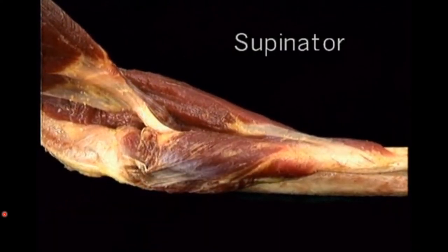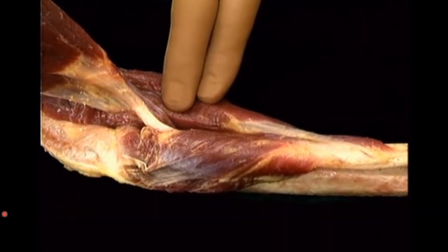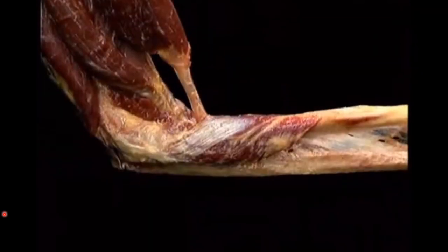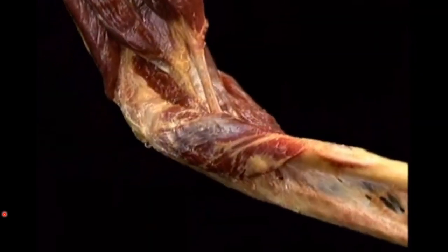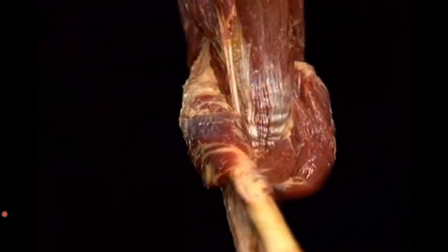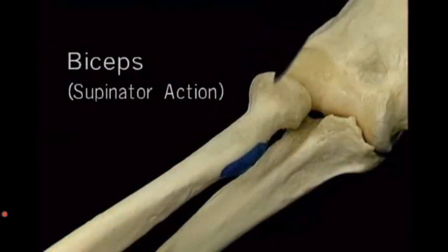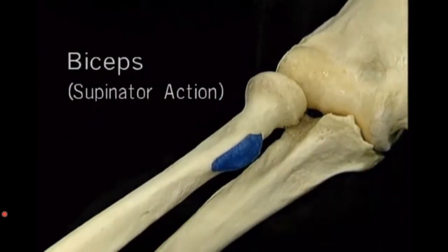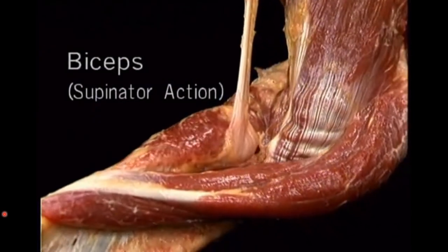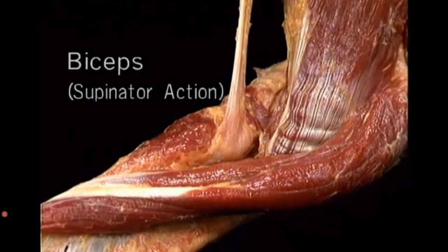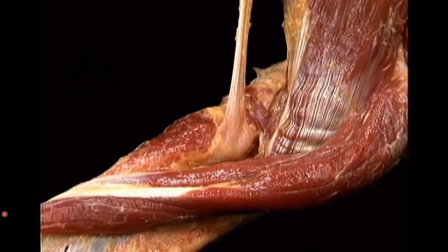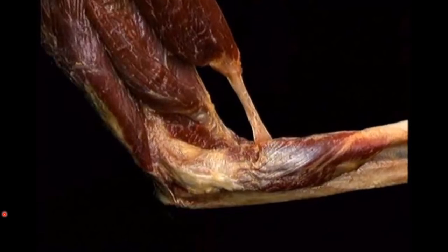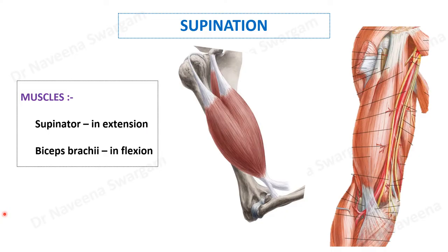This is the opposite movement done by the pronator teres muscle. Here is the biceps brachii tendon; it inserts onto the radial tuberosity. When it contracts, it causes lateral rotation of the upper end of the radius and acts as a powerful supinator in the flexed elbow.